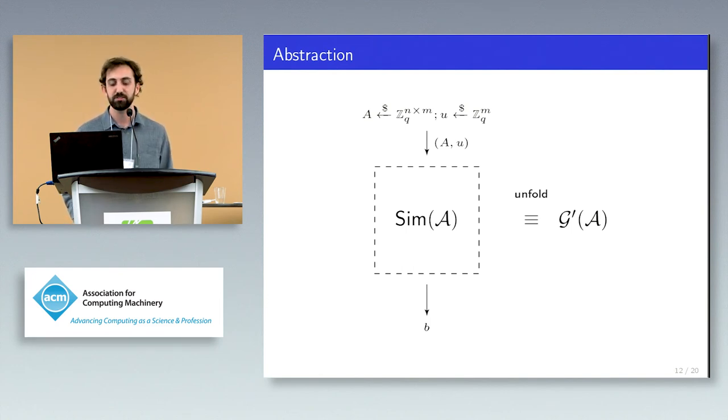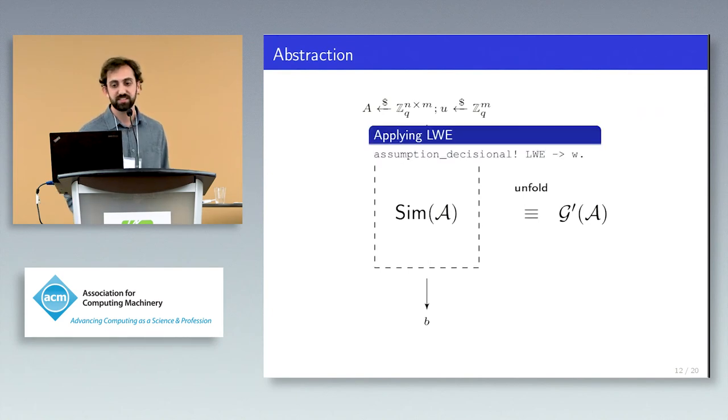Given that we can do this factoring step, this technique for applying assumptions results in a highly automated high-level method for proving cryptographic schemes secure. The resulting proof scripts closely resemble the proof one would write on paper. In many instances, the entire process of applying this assumption is given by a single line of code, such as the one here.